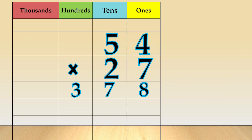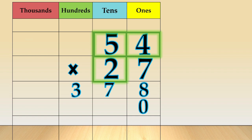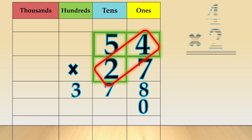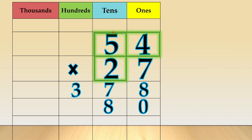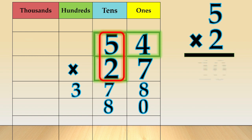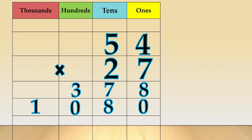Next, we multiply 54 times 2. Put a 0 to hold the ones place. Now, we add the partial products to get the final answer.